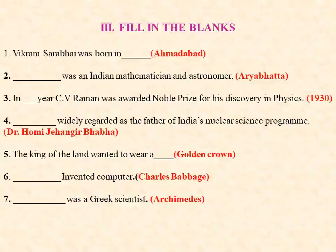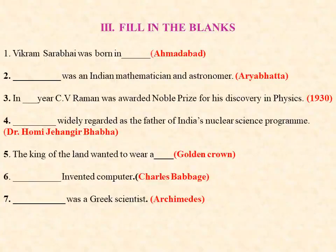Fill in the blanks for Unit 2. First one: Vikram Sarabhai was born in Ahmedabad. Second one: Aryabhatta was an Indian mathematician and astronomer. Third one: in 1930, C.V. Raman was awarded the Nobel Prize for his discovery in physics.